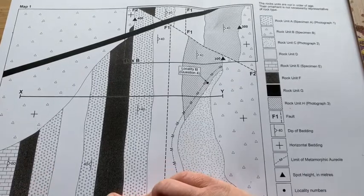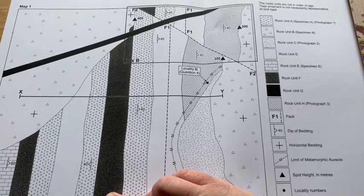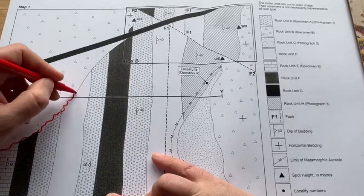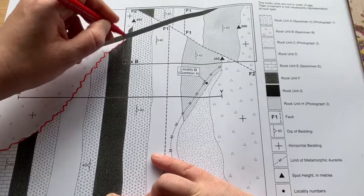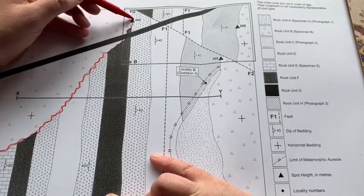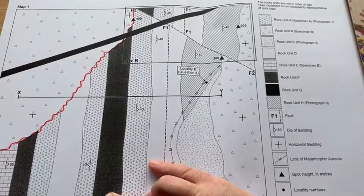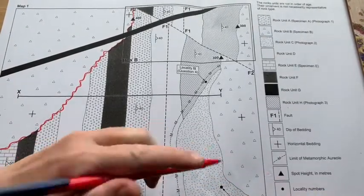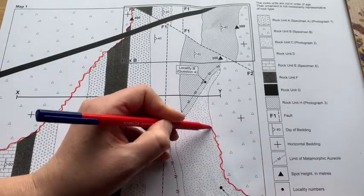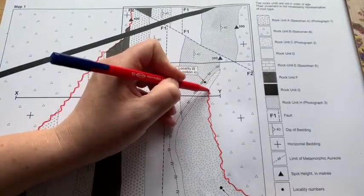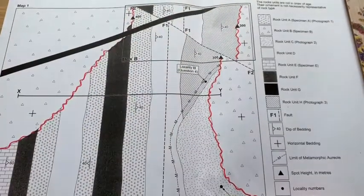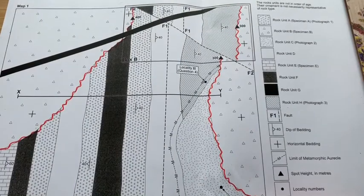I'm going to mark on the unconformity. It's at the base of rock unit B, and you can see that this unconformity continues all the way across the map. It gets stopped by this feature here and continues to the north. The same boundary can be seen on this side of the map, so I'm going to mark that in as well.